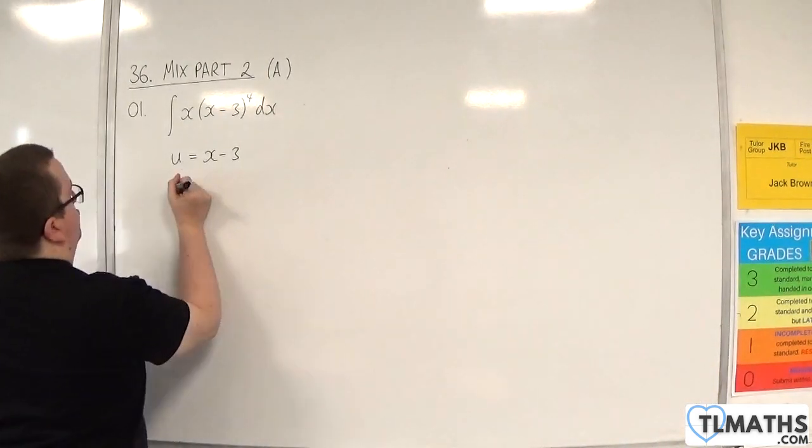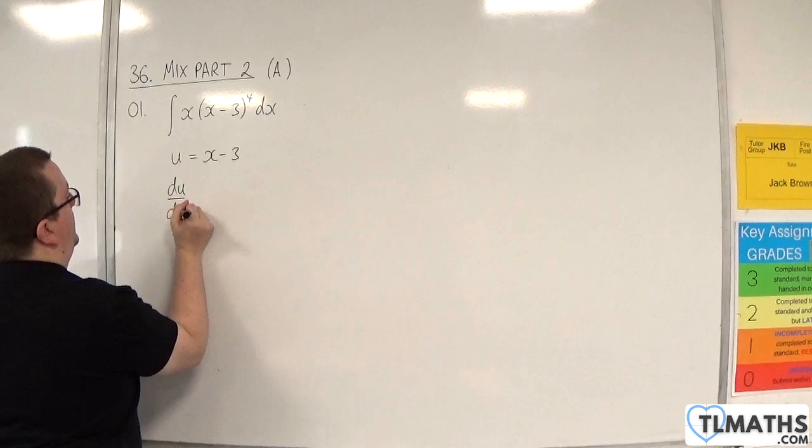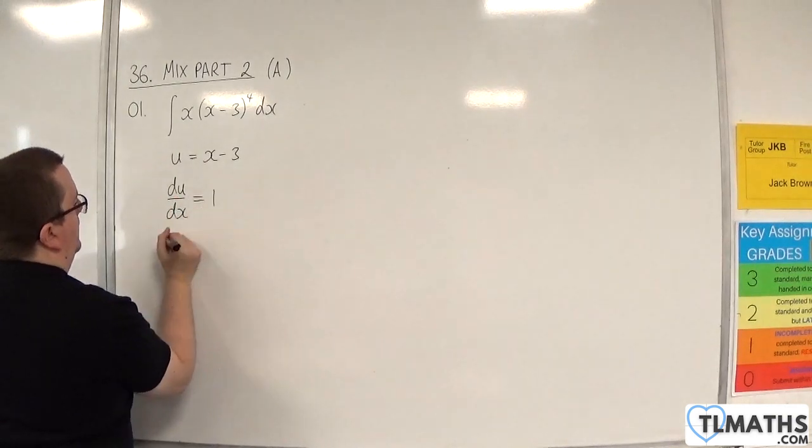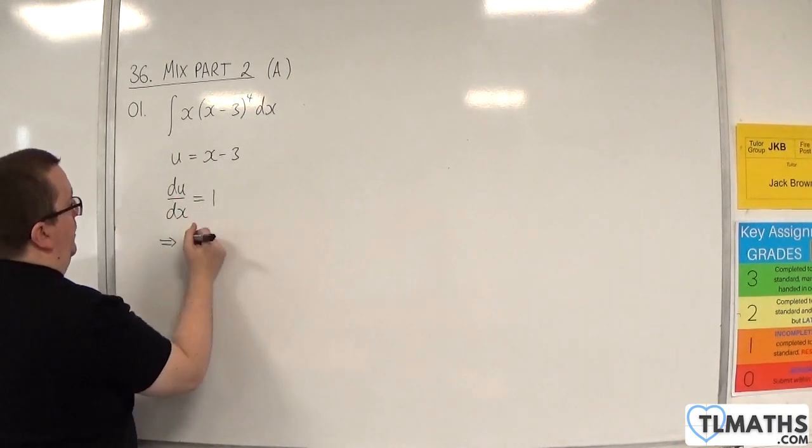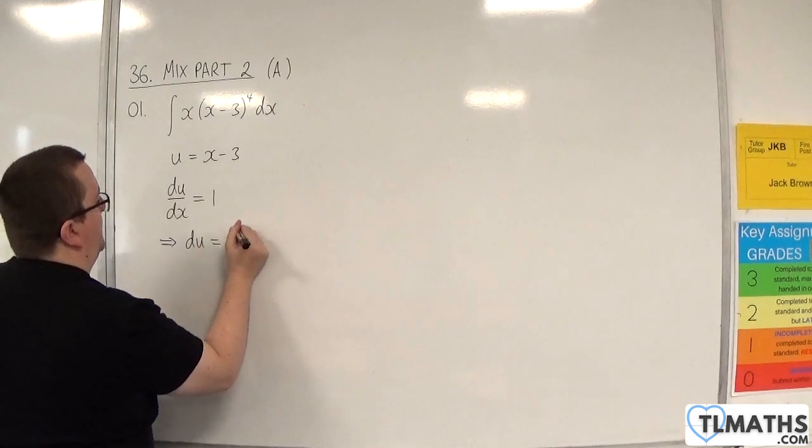So first step, differentiate the substitution. du/dx is equal to 1, then rearrange this to get dx equals du, so just multiply both sides by dx.